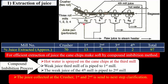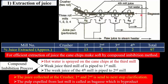The juice collected from the first and second mills is then sent to the next step for clarification of the juice. The pulp expelled from the mill house is called bagasse, which is one of the important by-products of the sugar industry.